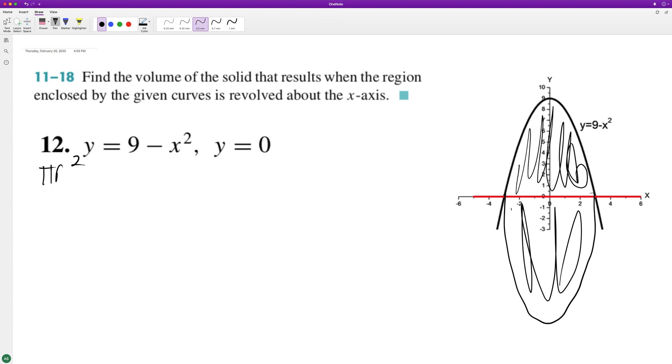That's using washers, pi r squared. So we have pi and we're integrating, and it looks like we're just going to be integrating along the x-axis. So it's just going to be 9 minus x squared minus the x-axis, which is 0 squared. So we can just leave that be. So this is dx.